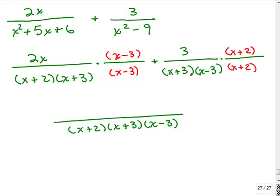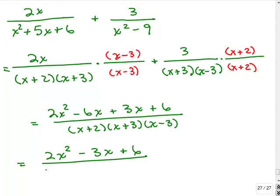All right, now what's the next thing we do? We have to simplify each numerator. So there's a distributive property in both of these. So in the first one I've got 2x times x minus 3 so that'll be 2x squared minus 6x. This is nice, there's a plus sign so that'll be simpler. We don't have to distribute any minus signs and we have to do the 3 times x plus 2. So that'll be a 3x plus 6. And then we combine like terms here so I have 2x squared minus 3x plus 6 all over x plus 2, x plus 3, x minus 3.